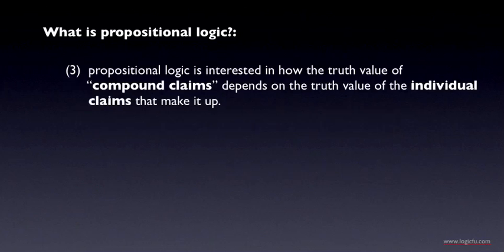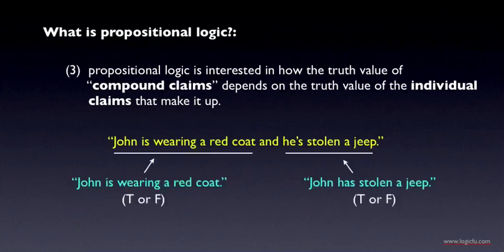Here's an example. 'John is wearing a red coat and he's stolen a jeep.' This is an example of a compound claim or a compound proposition. It's composed of two claims: John is wearing a red coat and John has stolen a jeep. Each of these component claims is a proposition that can be true or false. We can ask, is John wearing a red coat? If he is, it's true. If he's not, it's false. Similarly for whether John has stolen a jeep.